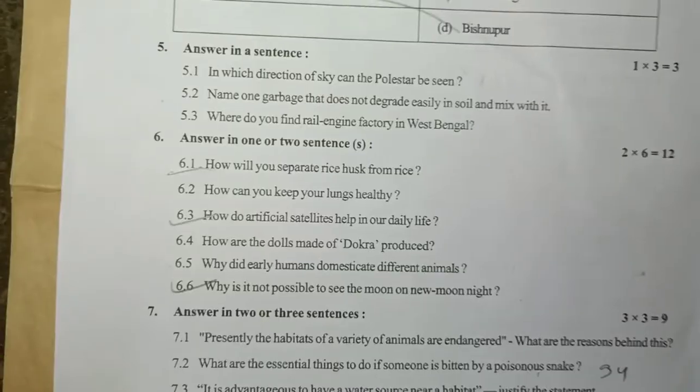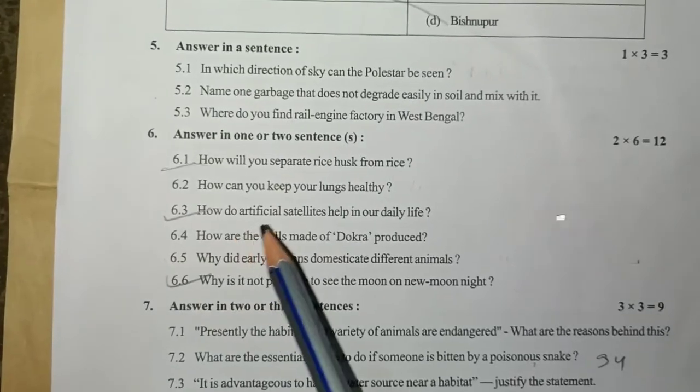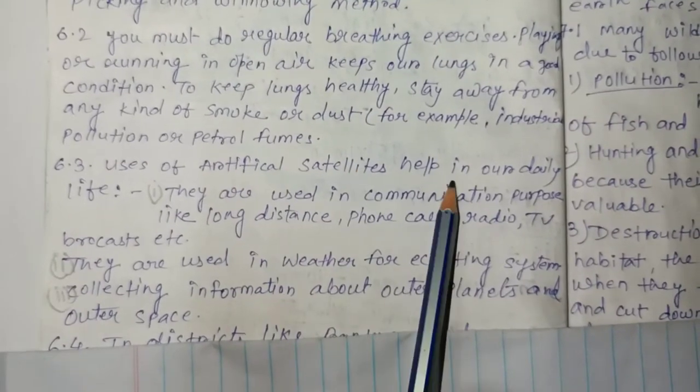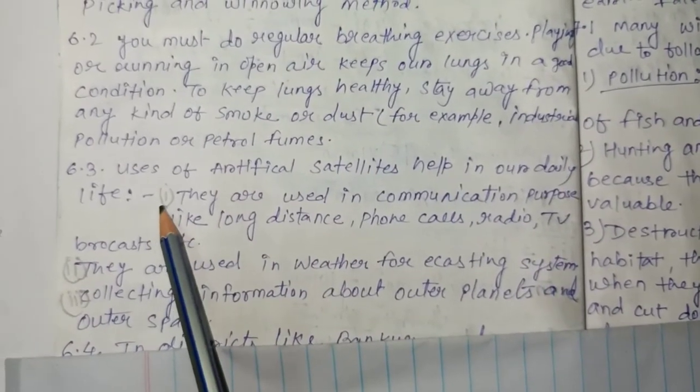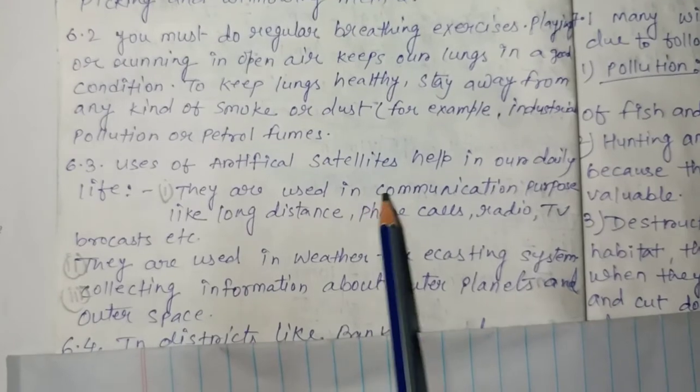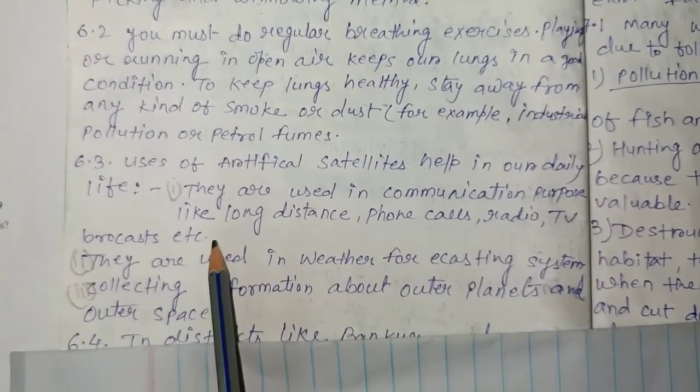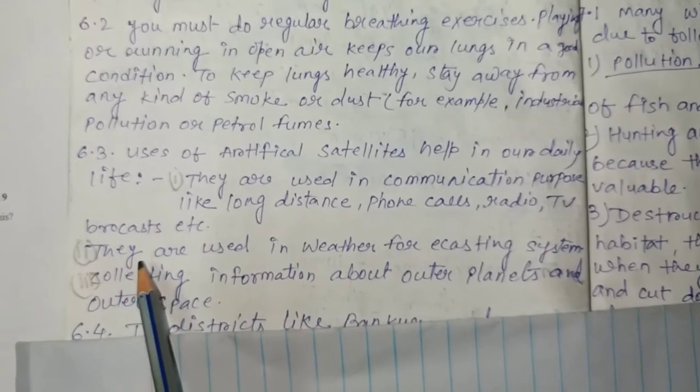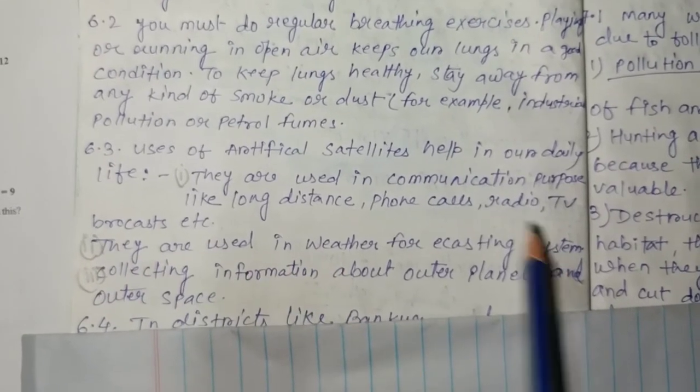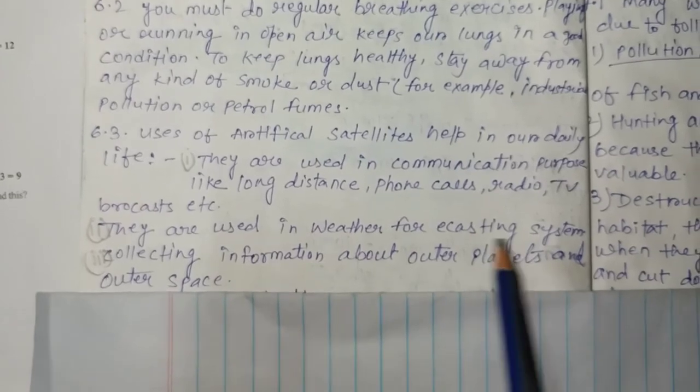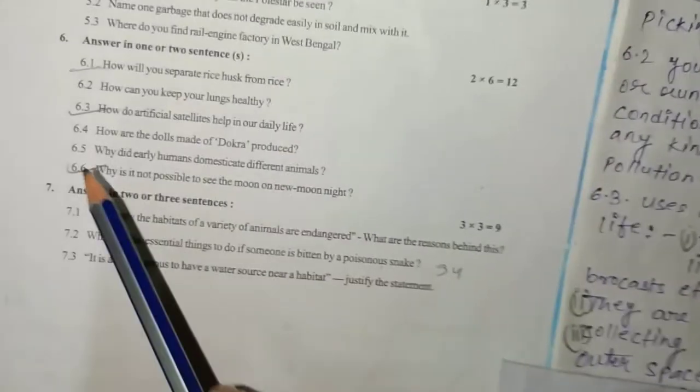6.3: How do artificial satellites help in our daily life? Uses of artificial satellites: Point 1 - They are used in communication purposes like long distance phone calls, radio, TV broadcasts, etc. Point 2 - They are used in weather forecasting systems. Point 3 - Collecting information about outer planets and outer space.